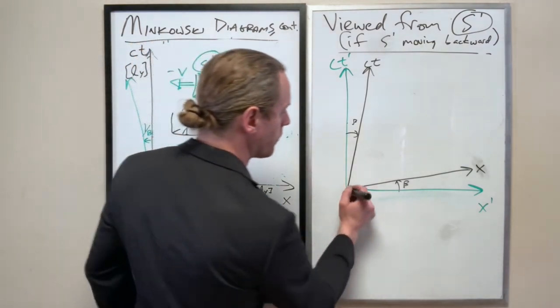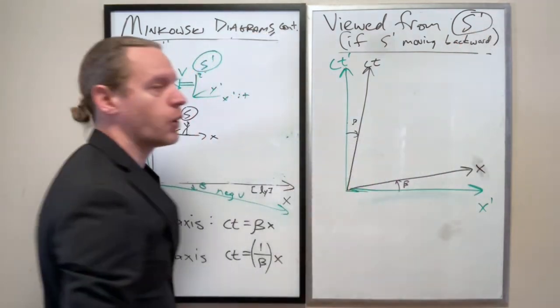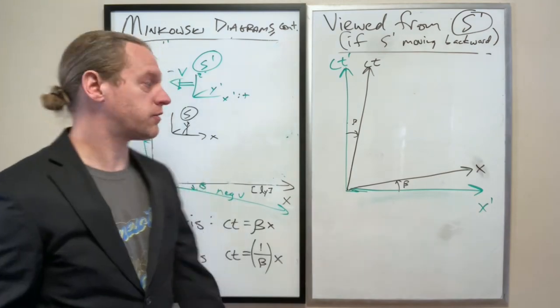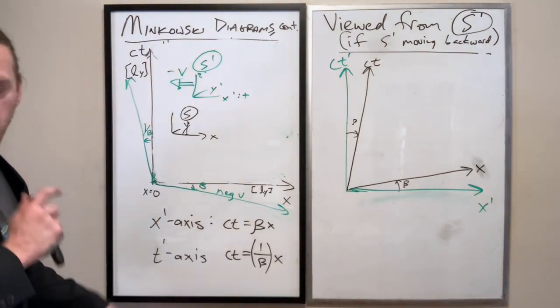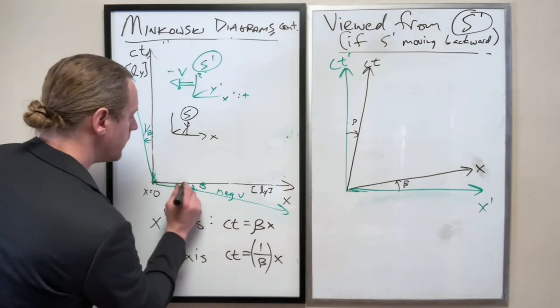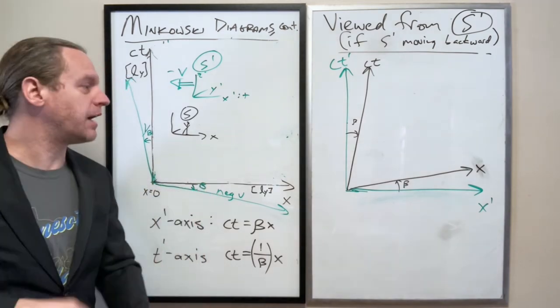And then of course, both will agree that light-like paths go exactly at a 45-degree angle or a slope of 1 with the proper units. And then with that, one more thing that will now actually make a lot more sense, I think, is considering simultaneity of events. Thank you.